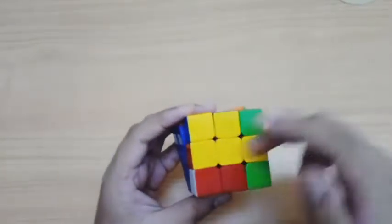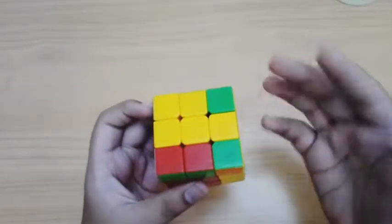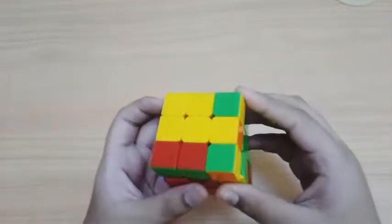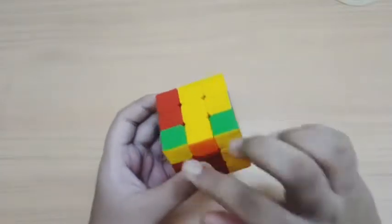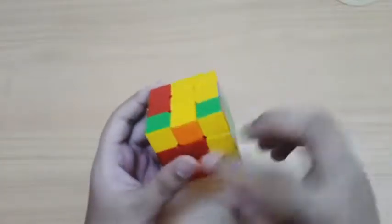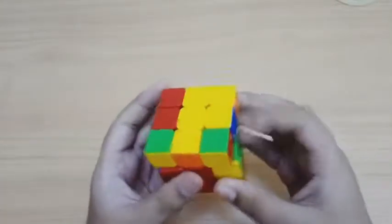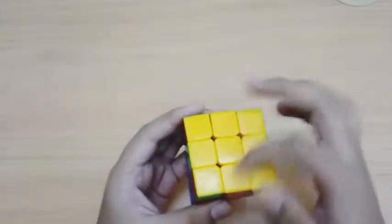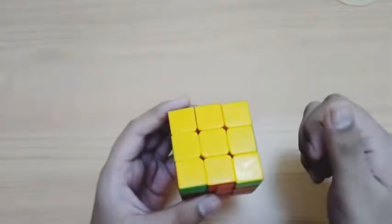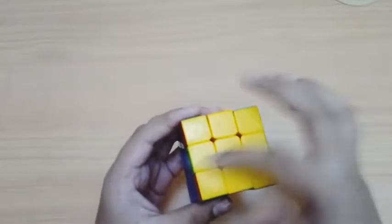And your cross will already be formed, so you can use winter variation. This is the easiest winter variation case actually. You just align these two like this and insert the pair. Now you can also use COL in this step as your cross will already be oriented.